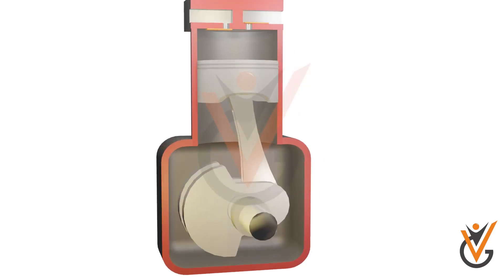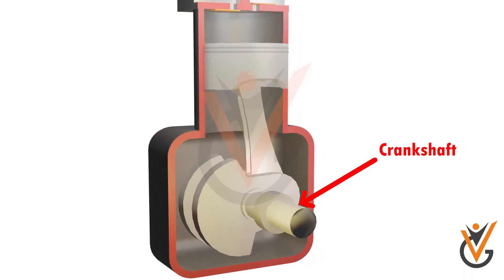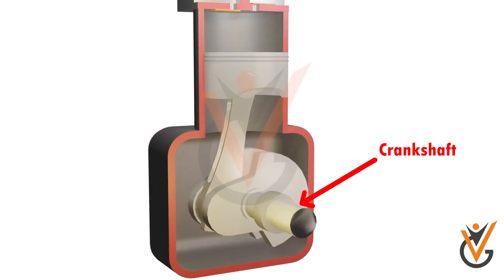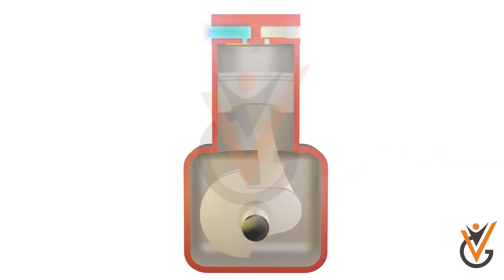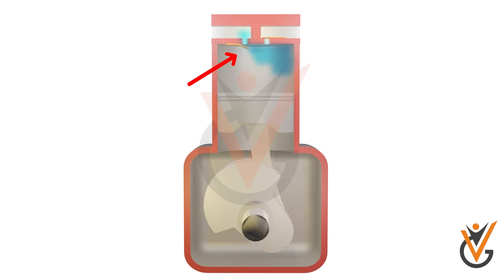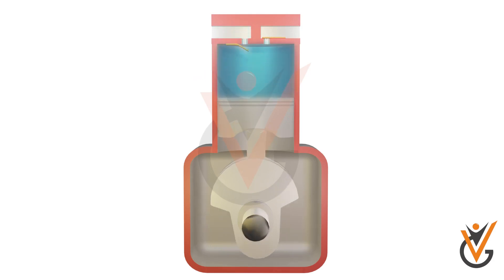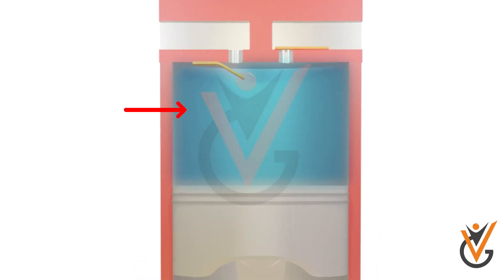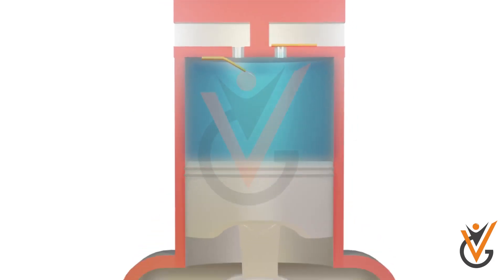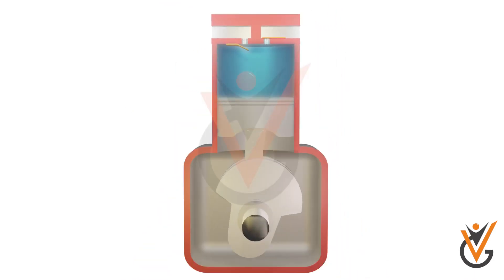The crankshaft rotates, which in turn moves the piston. The downward moving piston reduces the pressure in the main cylinder. The pressure difference will open the suction valve. The piston is taken down by the rotating crankshaft and the low-pressure air gets filled in the cylinder.